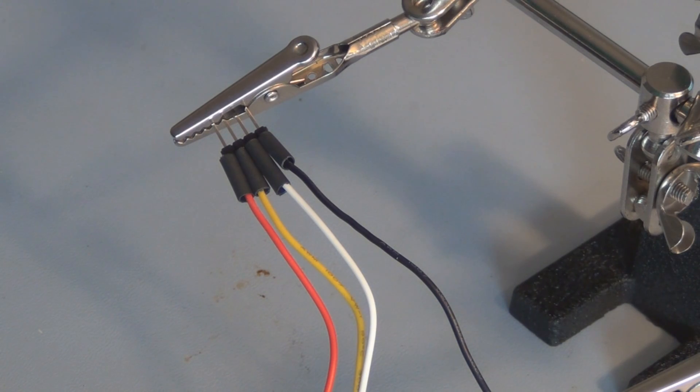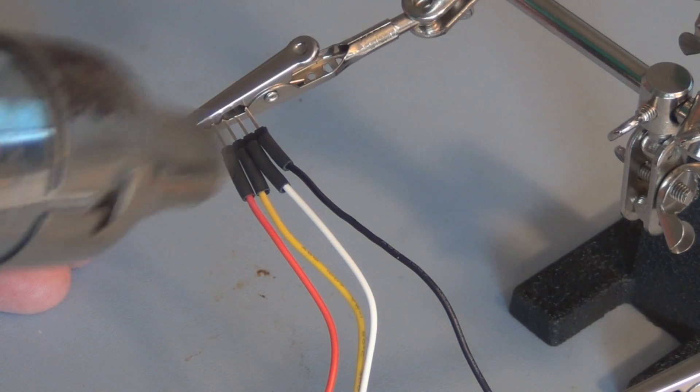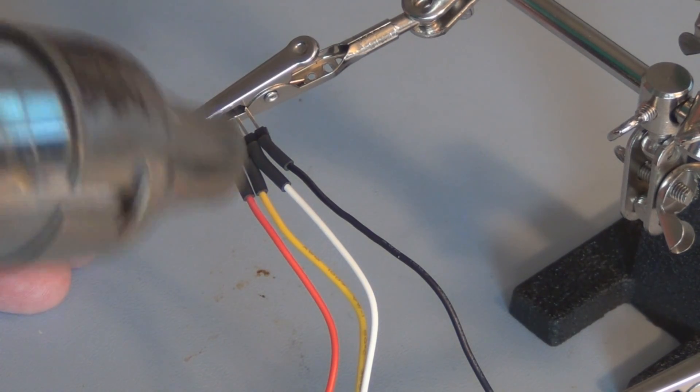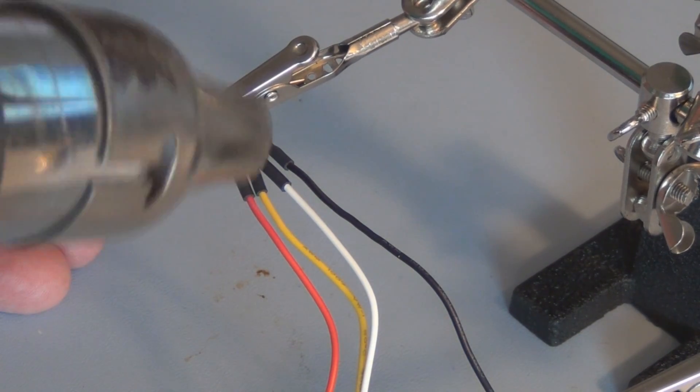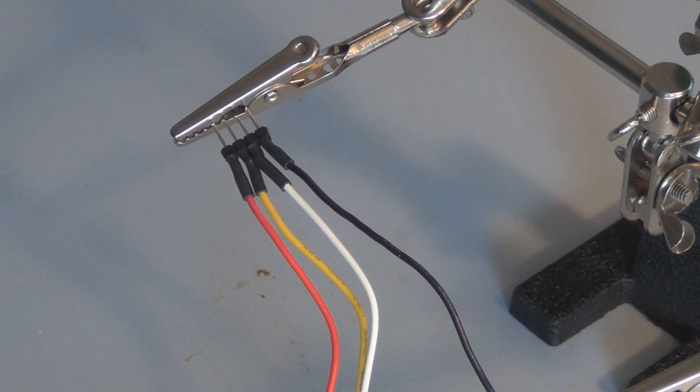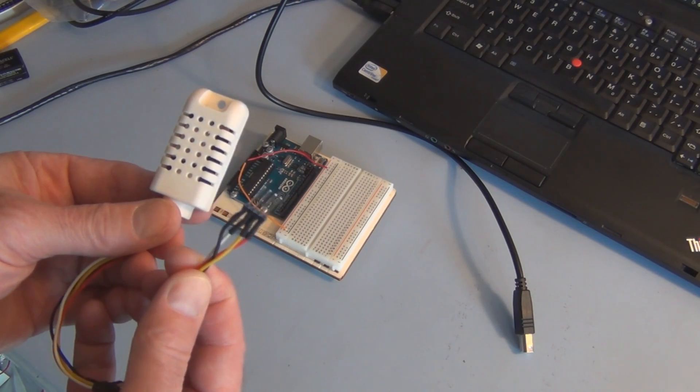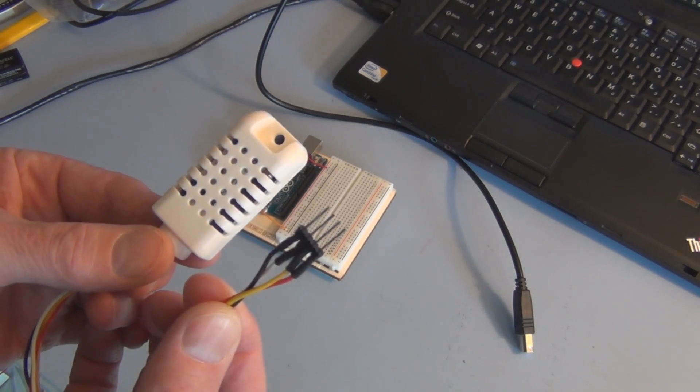So I've got the heat shrink positioned where I want it. Heat this up real quick. That's that. So this is going to be a little bit easier to plug into the breadboard with the male header pins on.